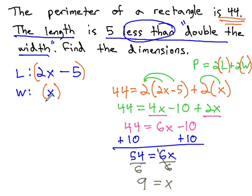Notice we clearly labeled the width as our x. The width is equal to 9. The length is 2x minus 5. 2 times 9 minus 5, because we just found x to be 9. Or 18 minus 5, which is 13.